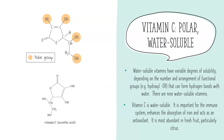Now looking at water-soluble vitamins, one of the most common is vitamin C, which has a role in our immune system and acts as an antioxidant. Water-soluble vitamins have varying degrees of solubility — it's not simply soluble or not, but a spectrum depending on the number of hydroxyl functional groups that can form hydrogen bonds with water. With vitamin C, we have only one ring, no large hydrophobic chain, and four polar hydroxyl groups able to form hydrogen bonds with water, making it soluble.